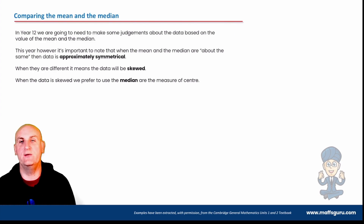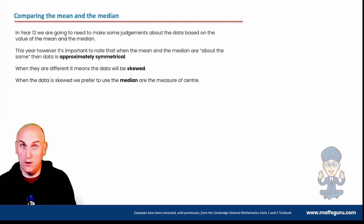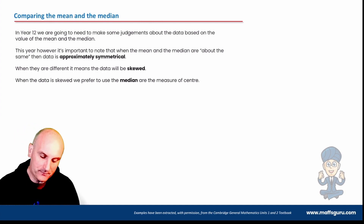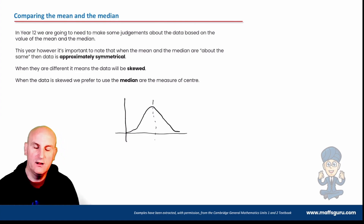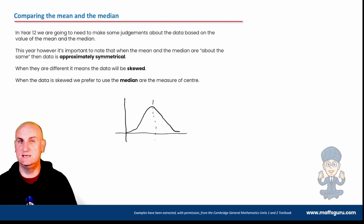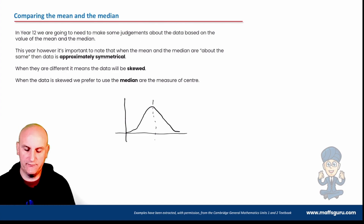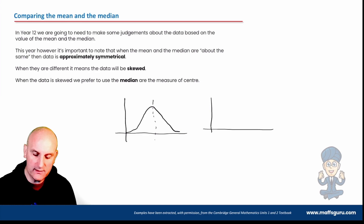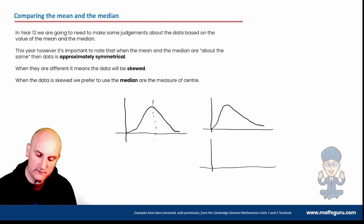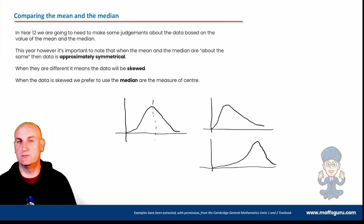The last part of this video is about comparing the mean and the median. In Year 12, we make judgments about data based on both values. When the mean and median are approximately the same, we can suggest the data is approximately symmetrical. When they are different, the data is either positively skewed or negatively skewed. That's why calculating both the mean and the median is so important.